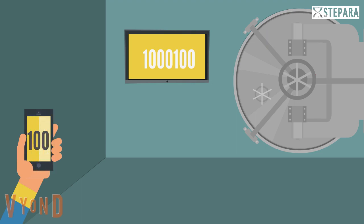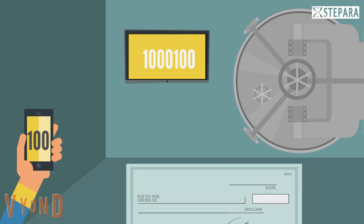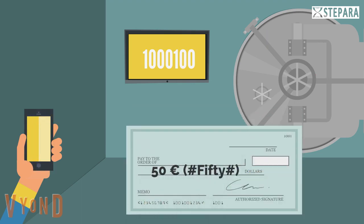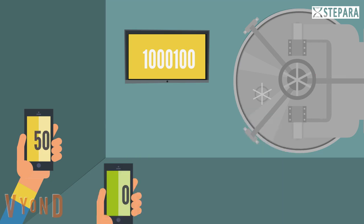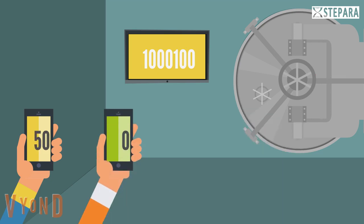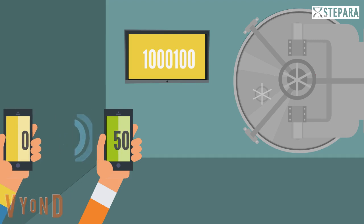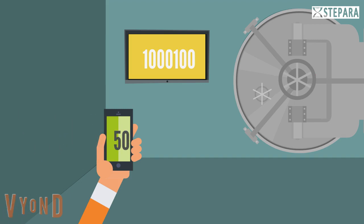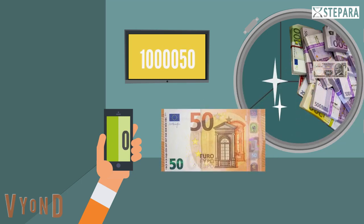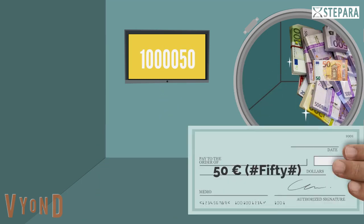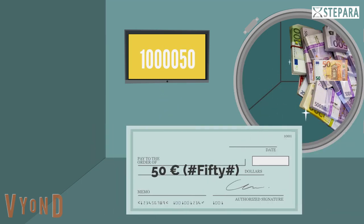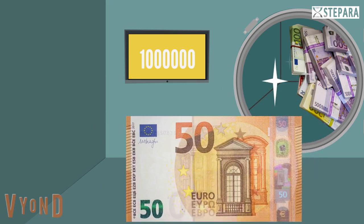The owner of the deposit money is able to issue a check due to the money in the bank, or can transfer to others' accounts. Whenever they want, the deposit money can be refunded from the bank. When the check holders present the checks to the bank, they can also collect the provisions of the checks.